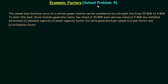Welcome to this lecture. Here we will solve the fourth and last problem based on economic factors. In this problem, the annual load duration curve of a certain power station can be considered as a straight line from 20MW to 4MW. To meet this load, three turbine generator units are installed: two rated at 10MW and one rated at 5MW. We need to calculate the installed capacity, plant capacity factor, units generated per annum, load factor, and utilization factor.